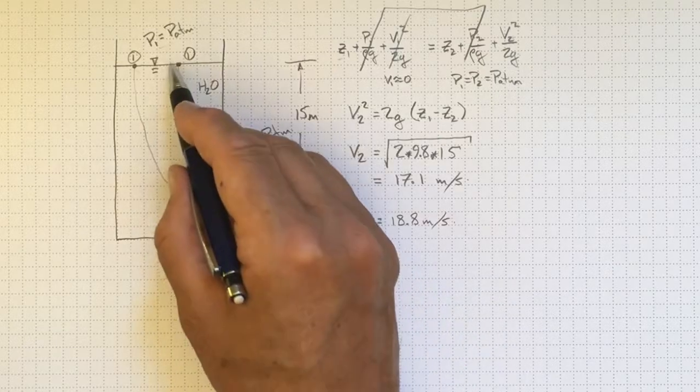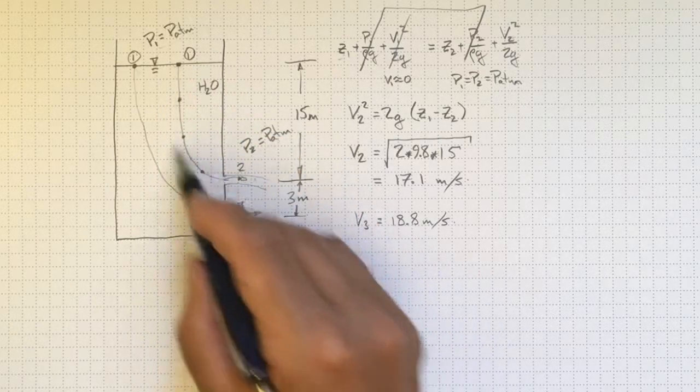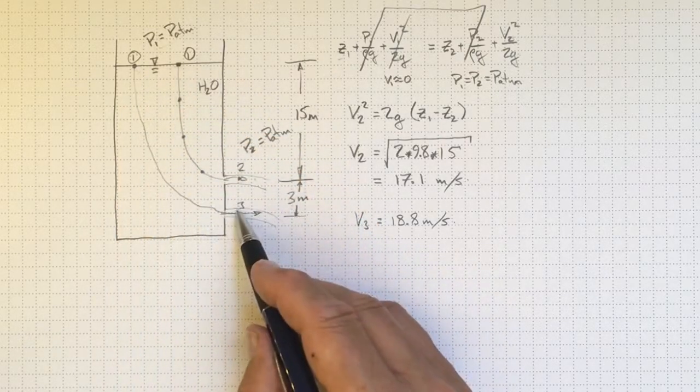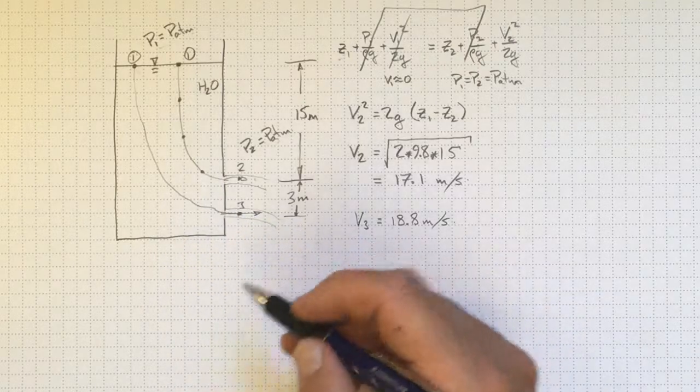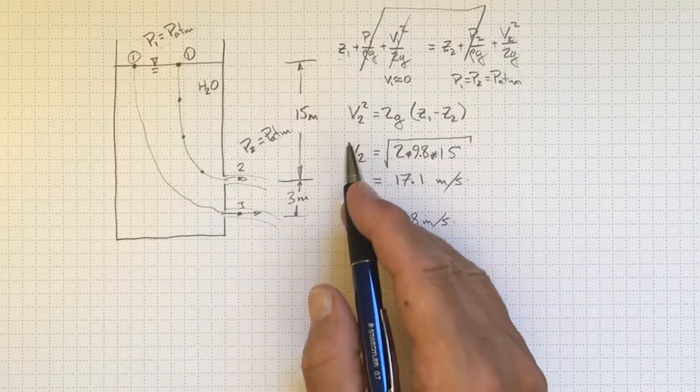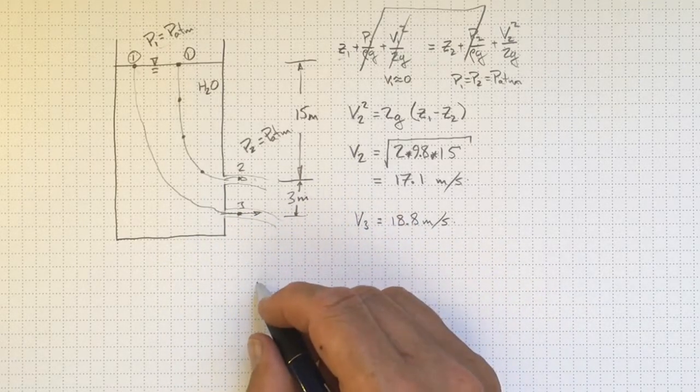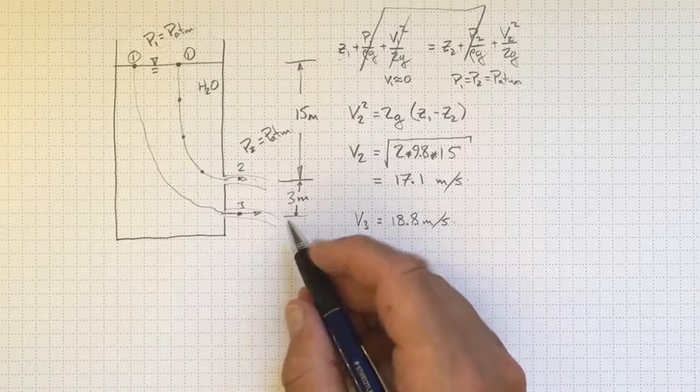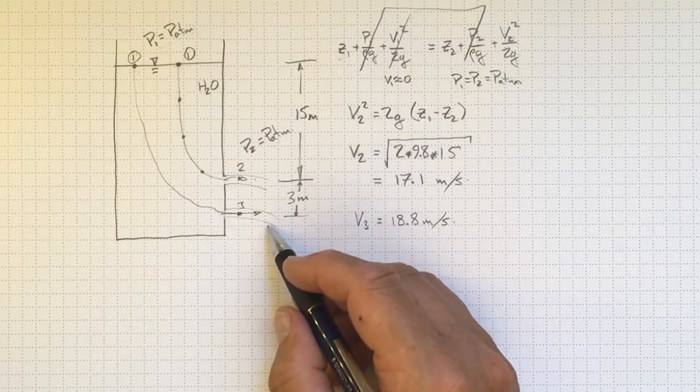We can write Bernoulli's equation on one streamline. Bernoulli's equation on the other streamline. And both of those will apply. Provided we follow a streamline and we have no significant energy losses along the way.